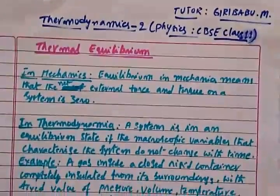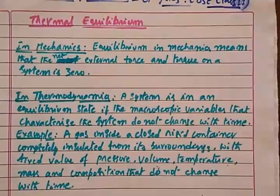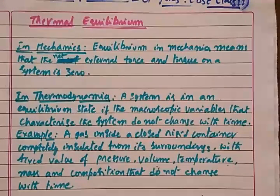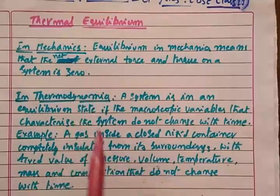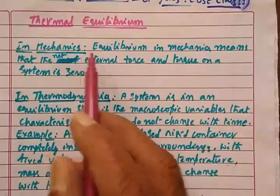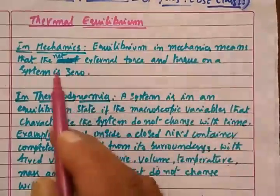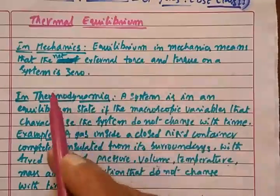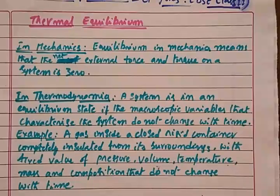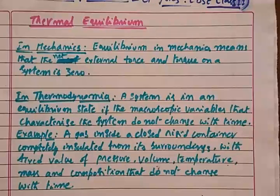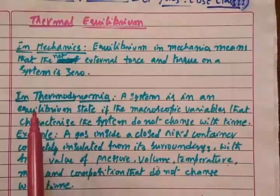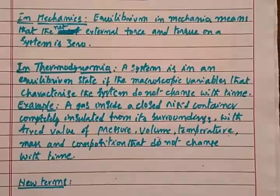First let us understand equilibrium in mechanics and thermodynamics, so we do not confuse the two. In mechanics, equilibrium means the net external force or torque on a system is zero. So if something is stationary it will remain stationary, and if it is moving it will keep moving at the same velocity in the same direction.